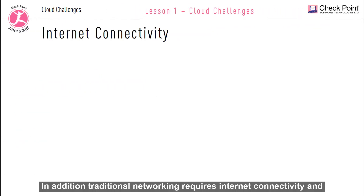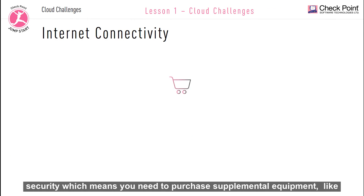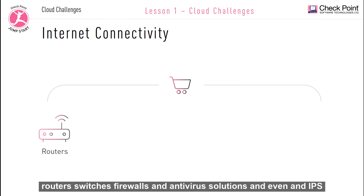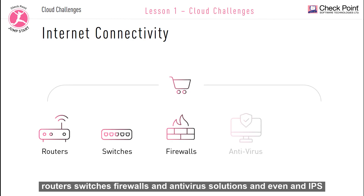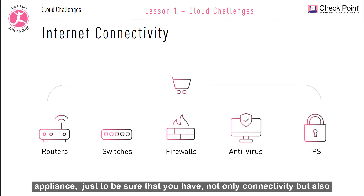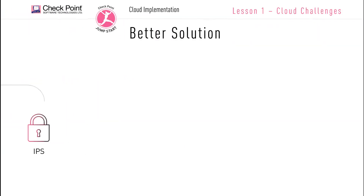In addition, traditional networking requires internet connectivity and security, which means you need to purchase supplemental equipment like routers, switches, firewalls, and antivirus solutions, and even an IPS appliance, just to be sure that you have not only connectivity, but also security.